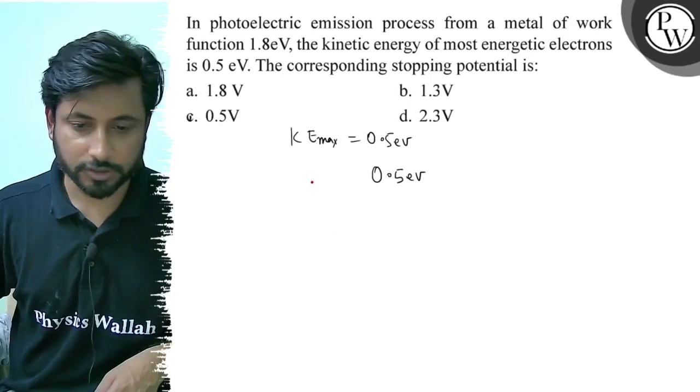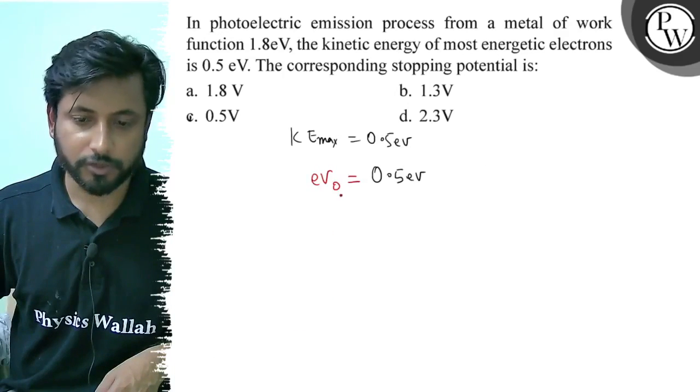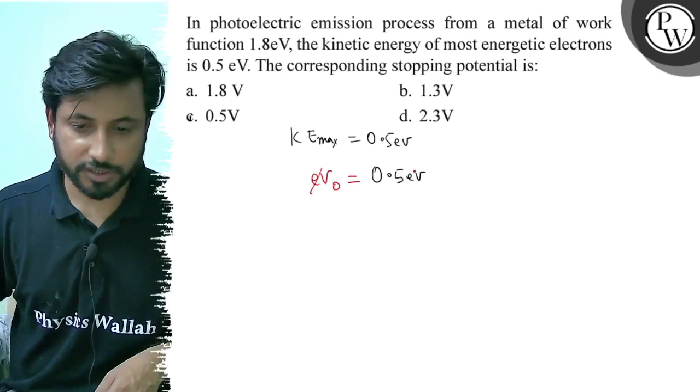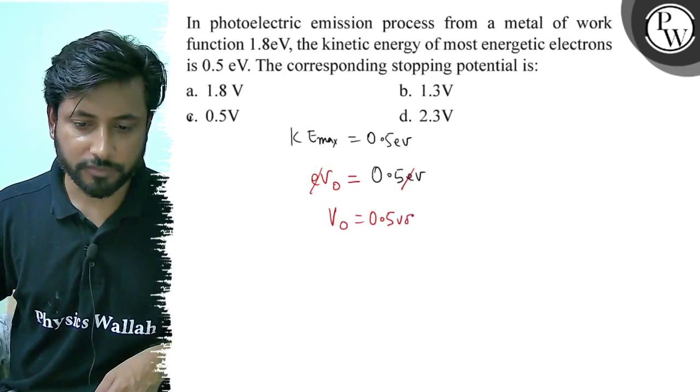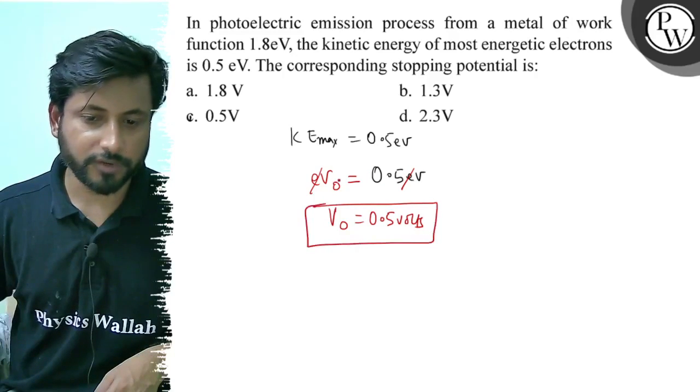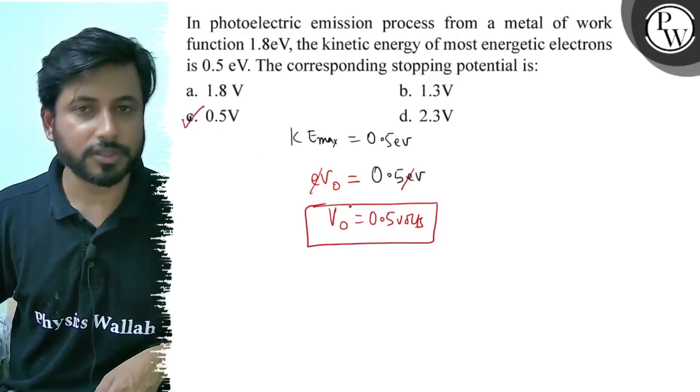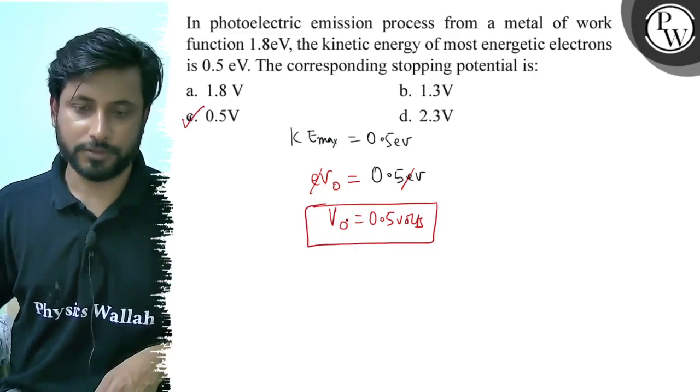eV_0 equals 0.5 electron volt. The e cancels, so stopping potential V_0 equals 0.5 volts. The final answer is option c) 0.5 volts. Best of luck.